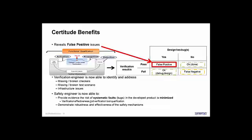So there are sources of false positives, which can be missing broken checkers, missing broken test scenarios, infrastructure issues. And currently, again, safety mechanism is both part of the design and part of the verification of the design. For safety engineers, they are now able to provide evidence that the risk of systematic faults or bugs in the developed product is minimized, that the verification effectiveness and verification tool qualification is correct, so that they have achieved high confidence in detecting bugs in their design or bugs in their safety mechanism, that their safety mechanisms through defect injection campaigns are effective, and that they are able to demonstrate the robustness and the effectiveness of the safety mechanism.